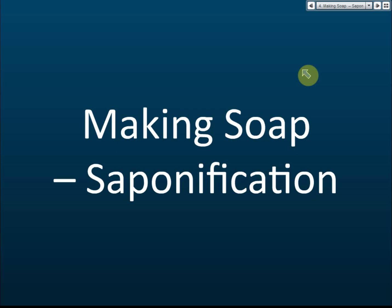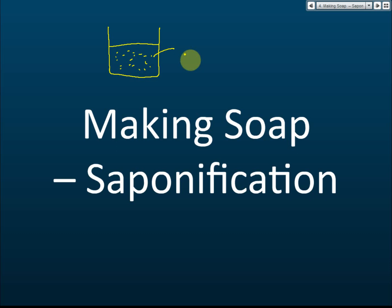We are making soap and the process is called saponification. Soap is actually a type of fatty acid, and it contains a long carbon chain called an alkyl group. Making soap is very easy — you can even do it at home, provided that you have alkali. You take a container and pour in some cooking oil, such as palm oil.